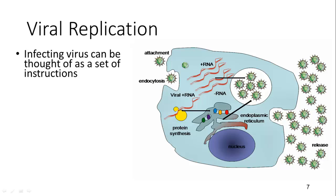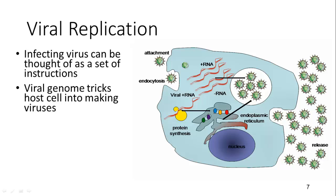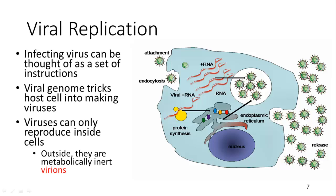The way a virus replicates is by hijacking a host cell and inserting its nucleic acid, which acts as instructions to make more viruses. The DNA or RNA tricks the host cell into using those instructions to translate them into proteins. Outside of a cell, a virus is called a virion, and it can only reproduce inside cells.